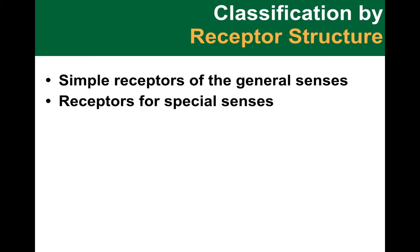Finally, we can classify receptors based on structural complexity. This is typically divided into two groups: ones that are more general senses and much simpler in structure, or we can have special sensory receptors for vision, hearing, equilibrium, smell, and taste. These are much more complex and involve sense organs. We will talk about them more later in this course if we have time.